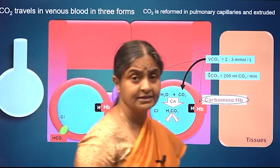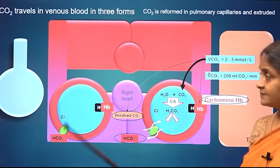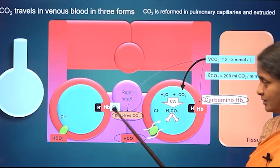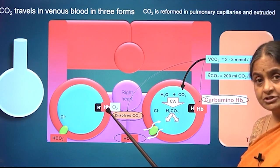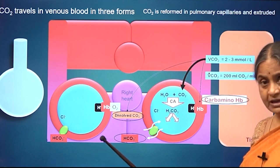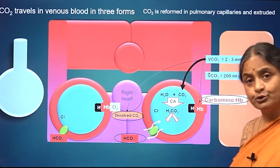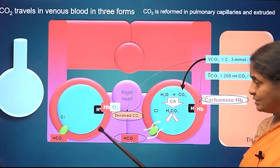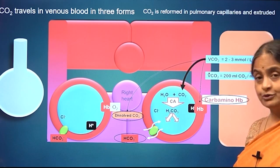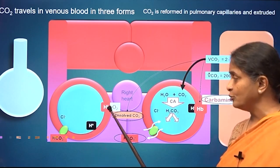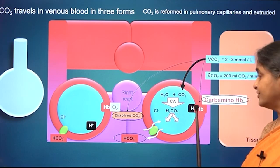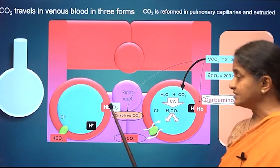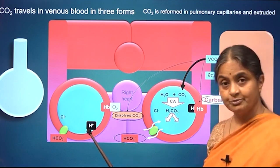Once blood enters pulmonary capillaries, oxygen enters the red blood cell and binds to hemoglobin. Oxyhemoglobin is stated to be a stronger acid than reduced hemoglobin. An acid is something which will allow protons to exist in the free form — it will protonate easily. Once oxygen binds to hemoglobin, it is going to knock off the protons, and that is why oxyhemoglobin is stated to be a stronger acid than reduced hemoglobin. In reduced hemoglobin, the protons are kept in the bound form, whereas when oxygen binds, it knocks the protons off.